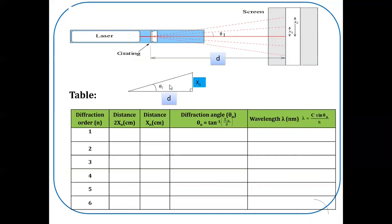Theta is very small. Tan theta is nothing but ratio of x1 by d. Theta 1 is tan inverse of x1 by d. Like this, you have to repeat for different order.